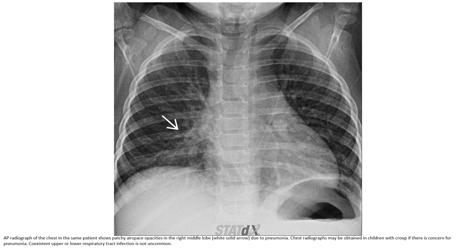AP of the chest in the same patient shows patchy opacity in the right middle lobe, due to pneumonia. A chest radiograph may be obtained in children with croup if there is concern for pneumonia, as coexistent upper and lower respiratory tract infection is not uncommon.